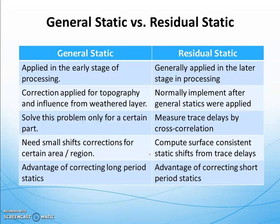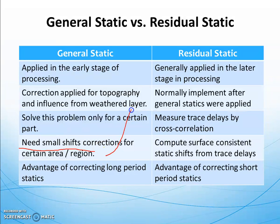In general static correction, you apply a bulk shift of a single value. This can be applied early in the processing because we know the specific acquisition information already. General static is applied for topography and influence from the weathered layer, since during acquisition we record the elevation values. This approach solves the problem for a certain part, but you also need some small additional shifts for certain areas or regions.